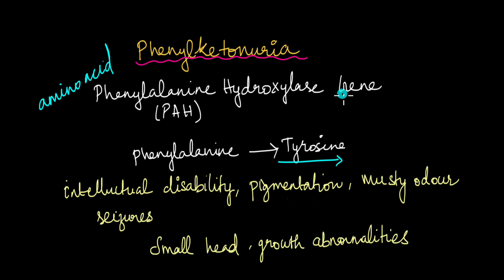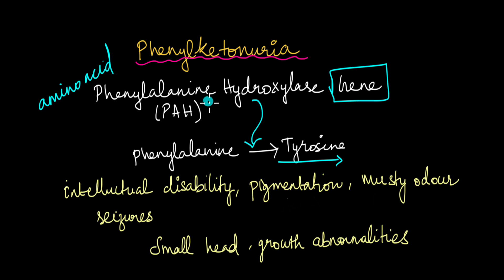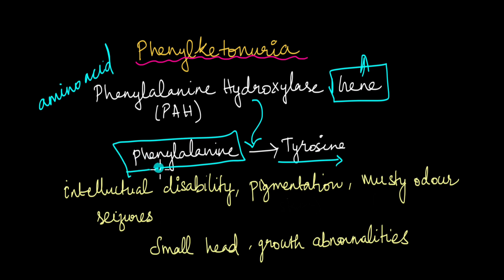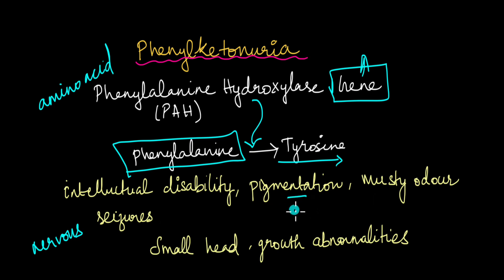But if this gene contains a mutation, it produces an inefficient phenylalanine hydroxylase — the enzyme needed to convert phenylalanine to tyrosine. In the absence or low levels of this enzyme due to the mutation, phenylalanine begins to accumulate in the body. The accumulation of phenylalanine doesn't just cause one effect; it causes a variety of effects. It affects the nervous system, causing conditions like intellectual disabilities and seizures. It also affects the integumentary system — the skin — causing pigmentation changes and a musty odor.